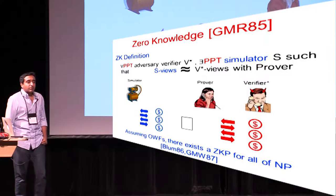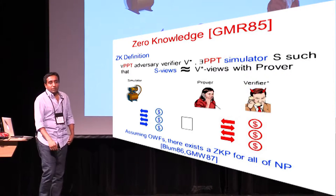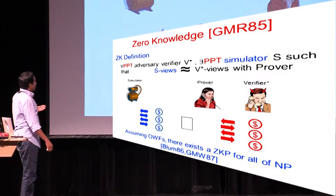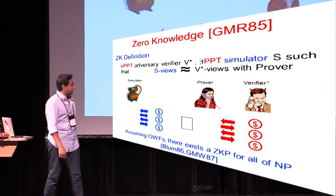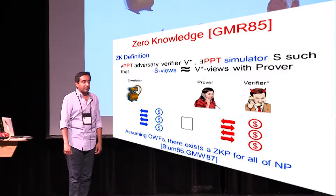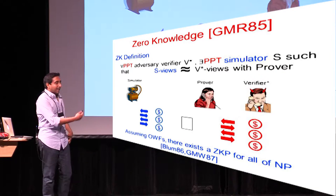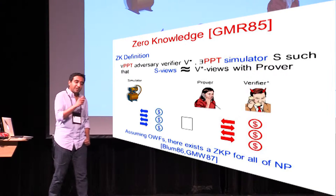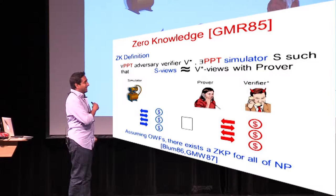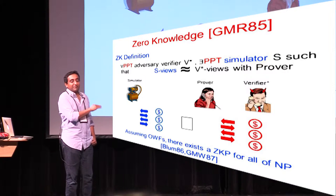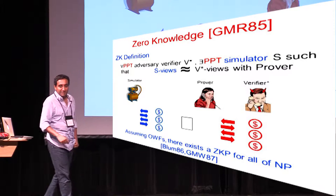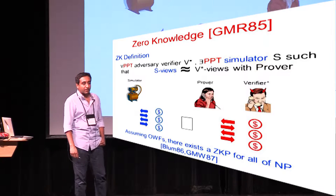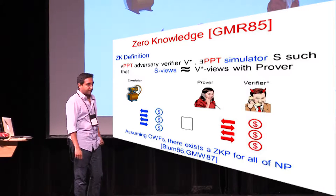So for what languages do we know how to construct zero-knowledge? Actually all of IP, but in this talk I am more interested in the class of NP. And it was shown early on that, assuming one-way functions, there exist zero-knowledge proofs for all of NP.